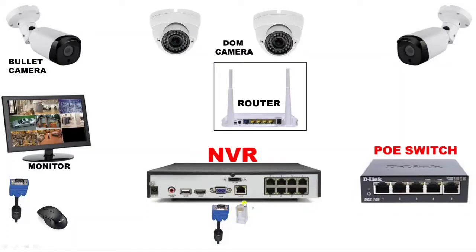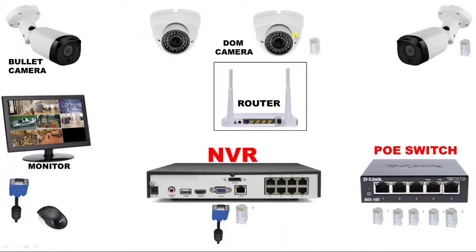We connect one RJ45 connector from NVR to the last terminal of the POE switch. We have four CCTV cameras, so we connect four RJ45 connectors for the four camera connections to the POE switch. Each CCTV camera gets one RJ45 connector. For router to NVR communication, we connect one LAN connector to the router and one LAN connector to the NVR, so you can watch CCTV footage on your mobile.